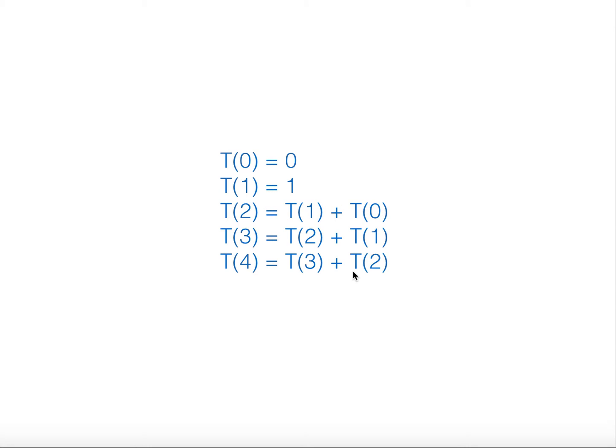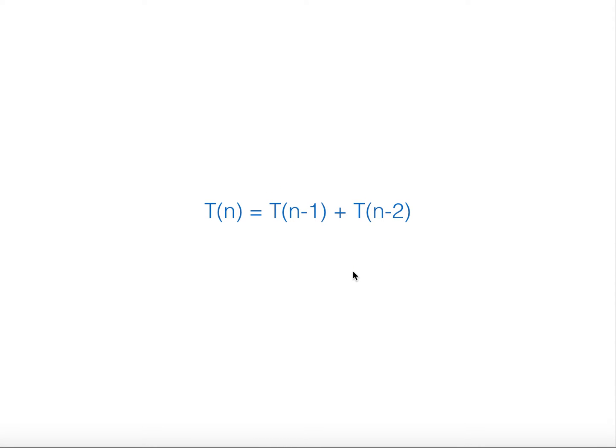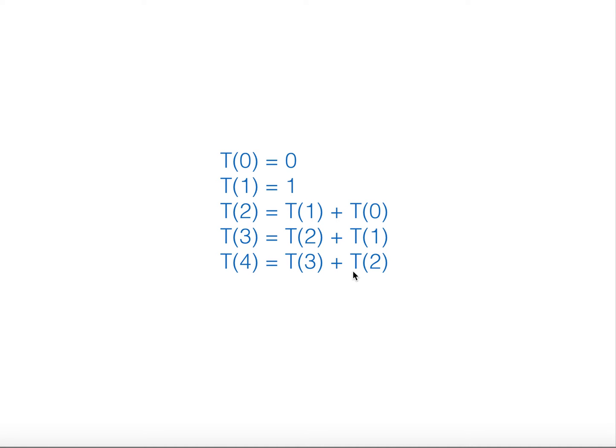The recurrence relation is T(n) = T(n-1) + T(n-2). To find T(2) we just need T(1) and T(0) and add them together. Here T(2) is the bigger problem, while T(1) and T(0) are sub-problems of T(2). This property is called optimal substructure — solve the two sub-problems to solve T(2).